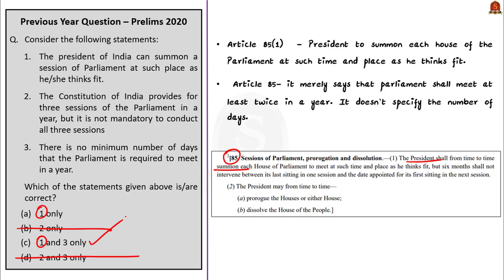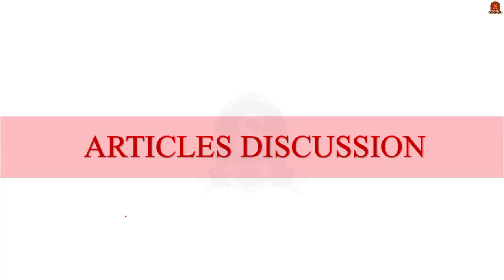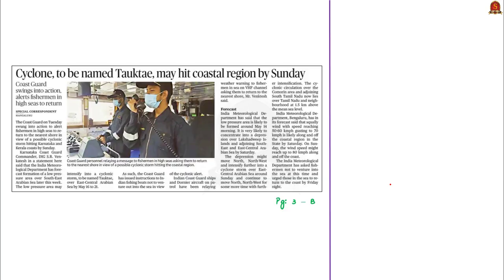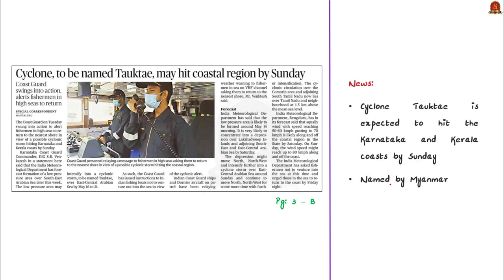With those questions we have come to the end of the discussion on past year preliminary questions. Moving on to the newspaper analysis. This article is about Cyclone Tauktae, which is expected to hit the Karnataka and Kerala coasts. Note that the name Tauktae has been given by Myanmar. We have discussed the naming of cyclones in our 24th November 2020 analysis — go through that PDF for better understanding.